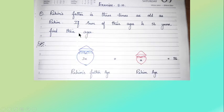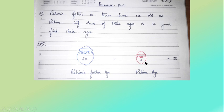Exercise 5.10, question number 1: Rahim's father is three times as old as Rahim. If the sum of their ages is 56 years, find their ages. Rahim's father's age is compared with Rahim's, but Rahim's age is not given — it is unknown. The first preference should be given to the one it is compared with, so we assign Rahim's age as x.